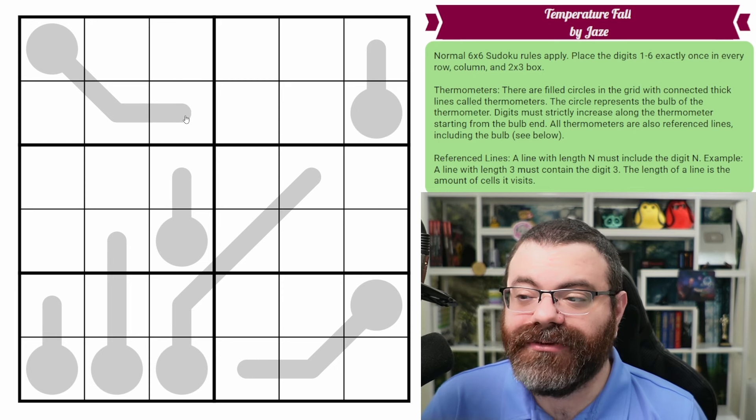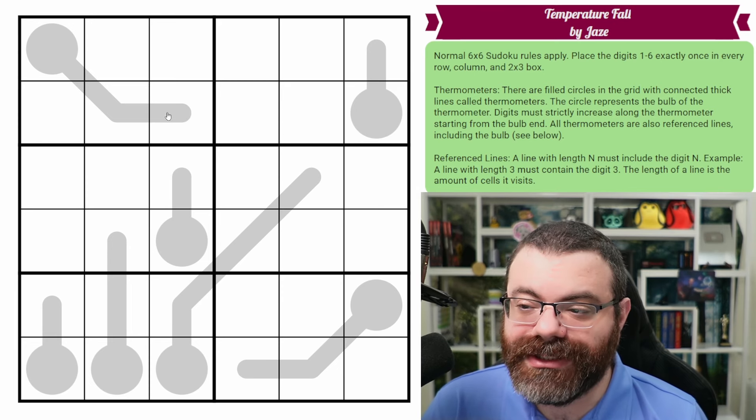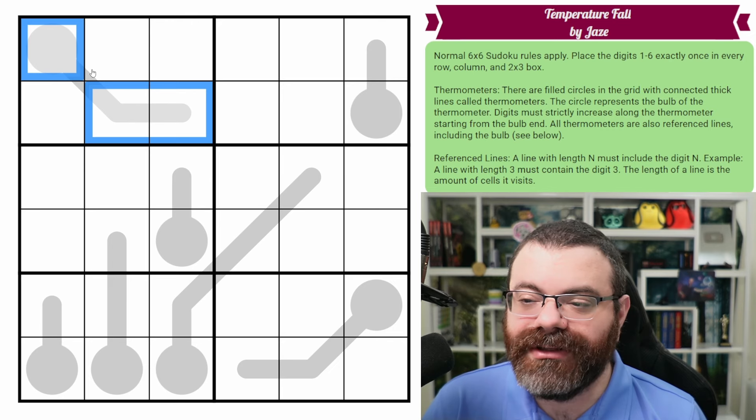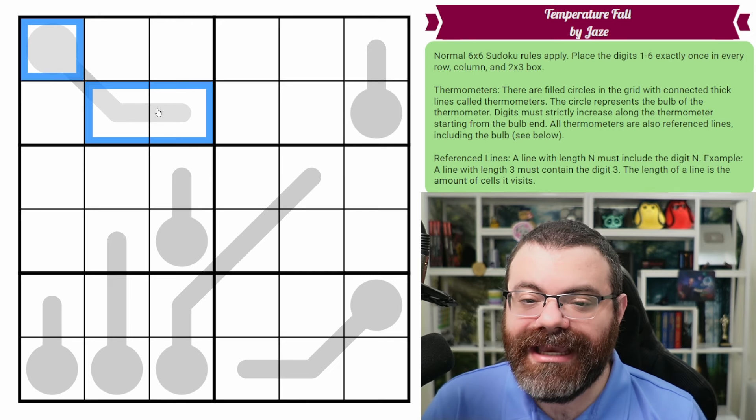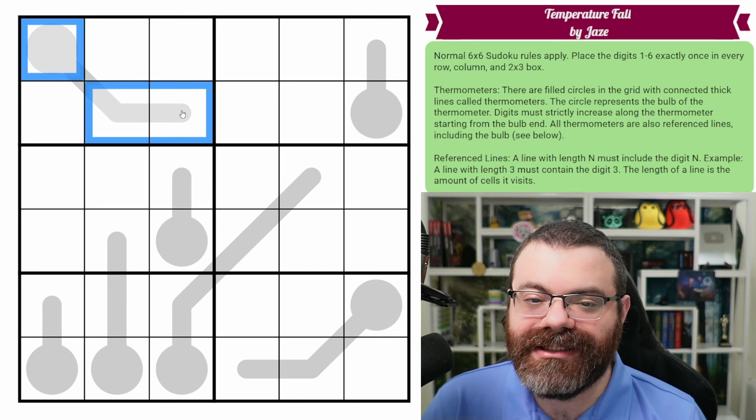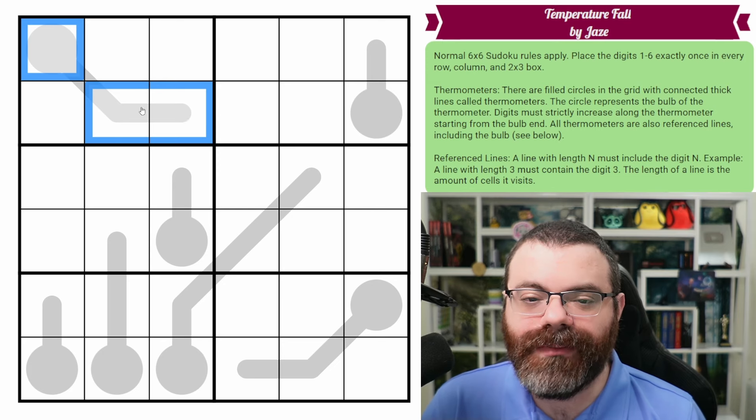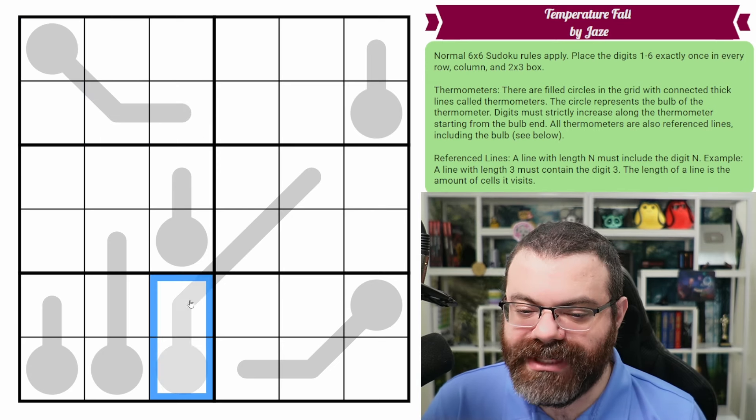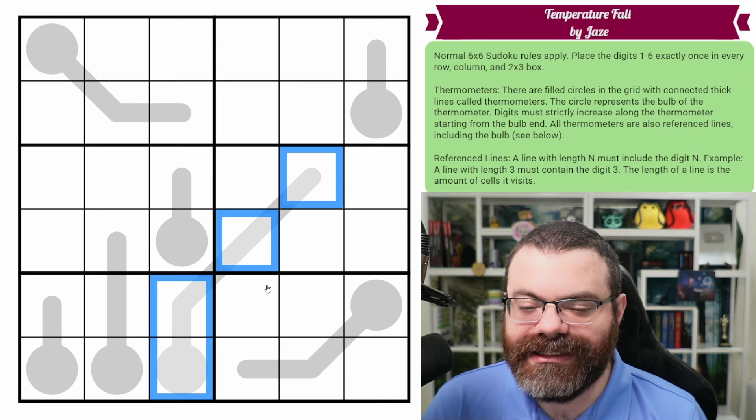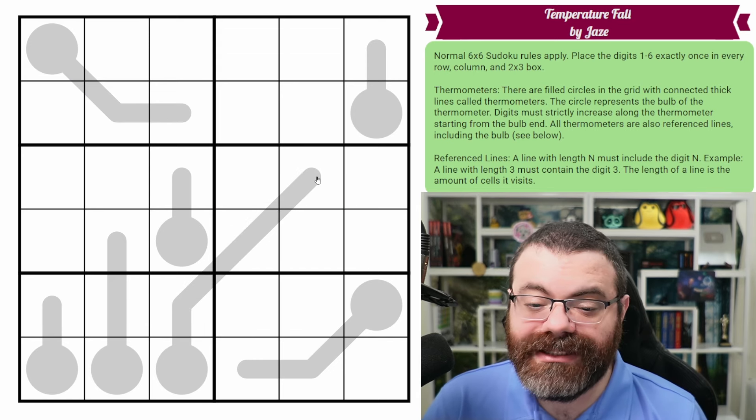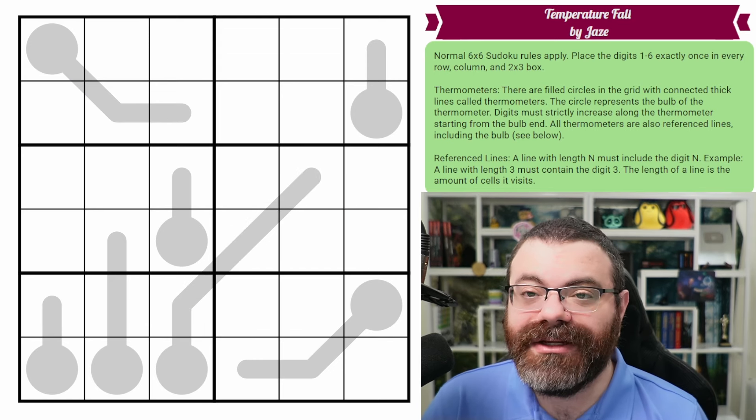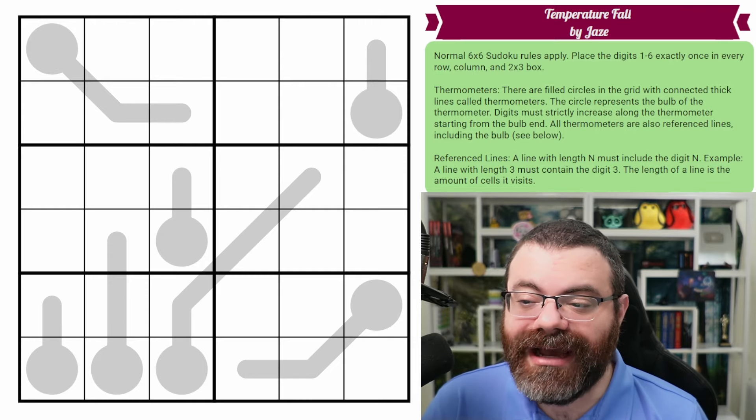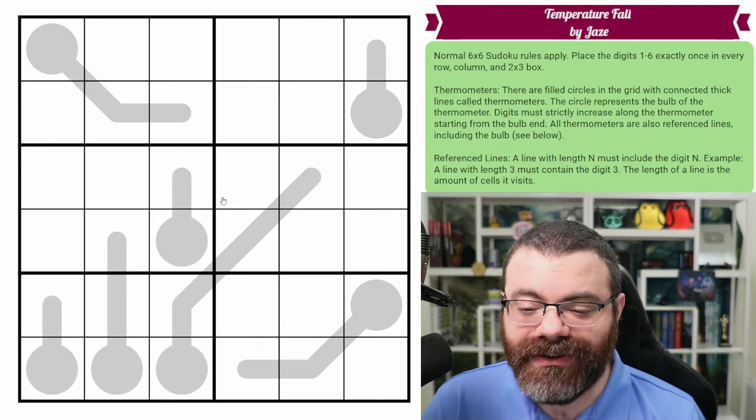But in addition to that, the thermometers are also referenced lines. So a reference line of length end. So this is a line of length three. We include the bulb must contain the digit end. So because this is length three, this thermometer somewhere on it must have a three. And then this thermometer, it's four in length. It needs to have a four on it. And that's it. Those are the rules. There's a link in the description. If you'd like to try the puzzle yourself or you can use the tracking sheet and I'm going to get started right now.